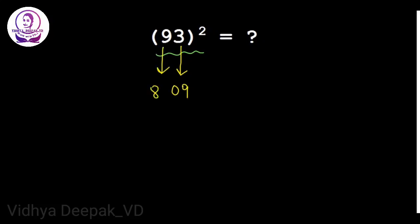Now what is the next step? We have to multiply 9 into 3 into 2. What is 9 into 3? 9 threes is 27 into 2.